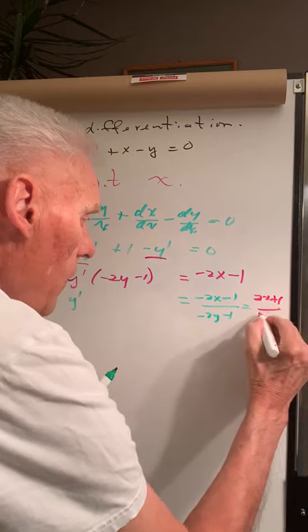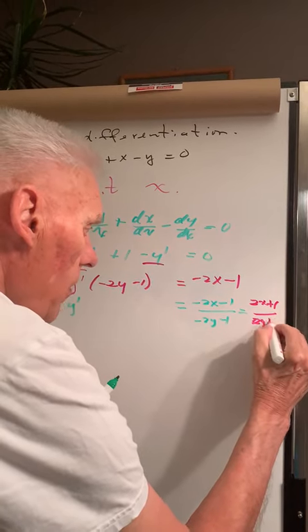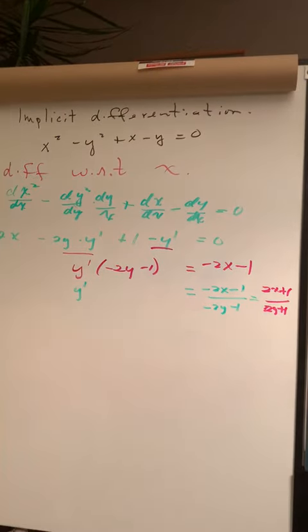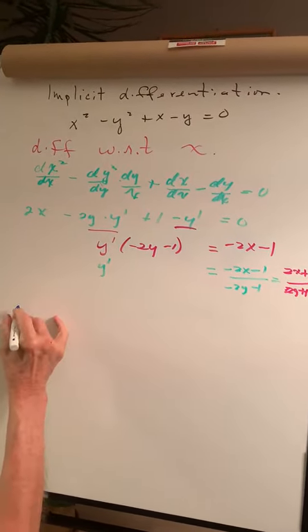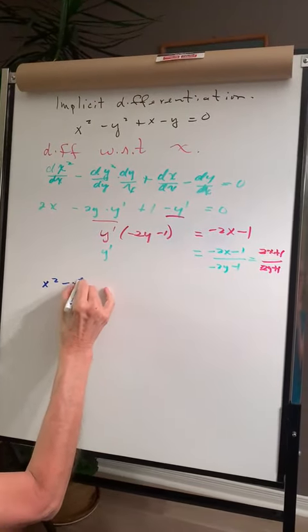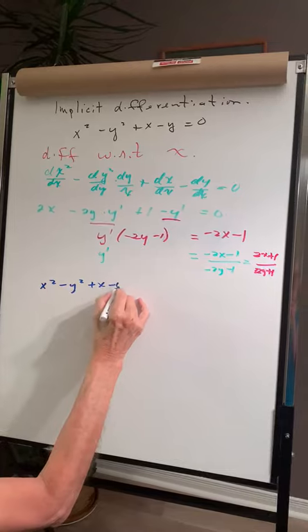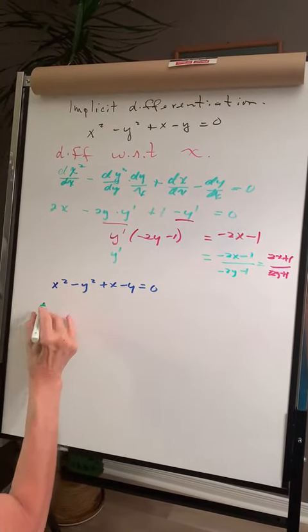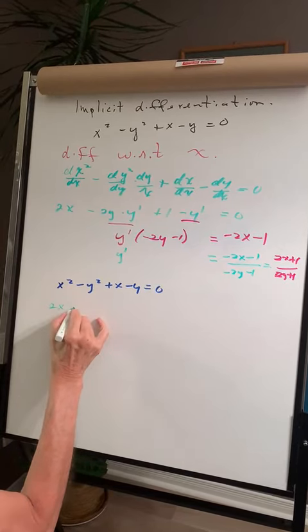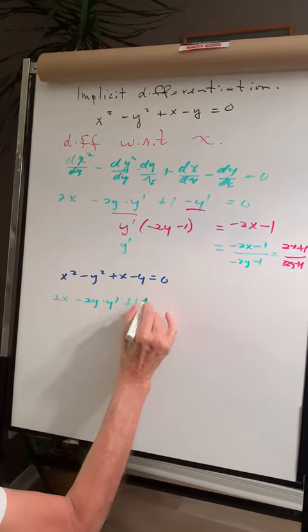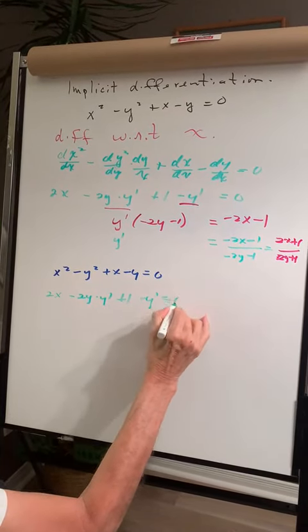Now we're going to do it another way. We have x² - y² + x - y = 0. This time, differentiating directly: 2x - 2y·y' + 1 - y' = 0.